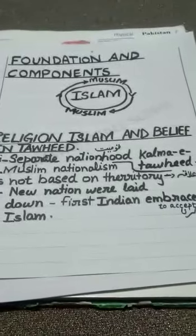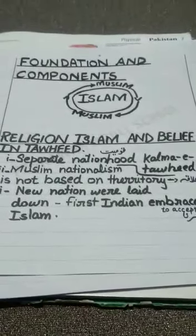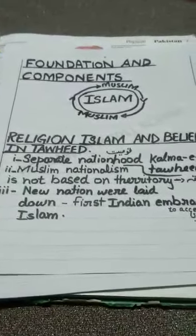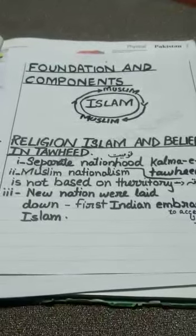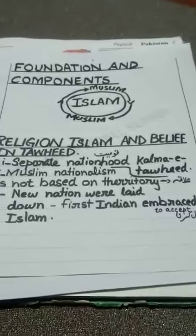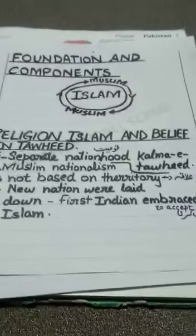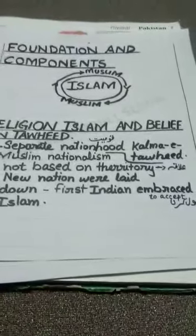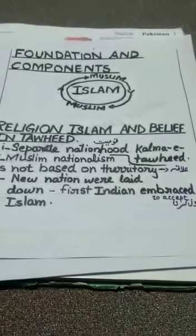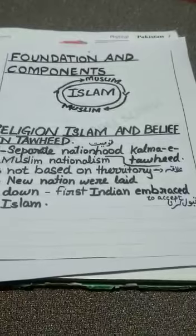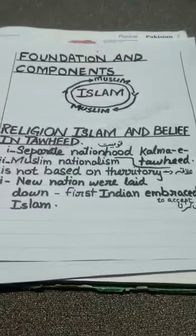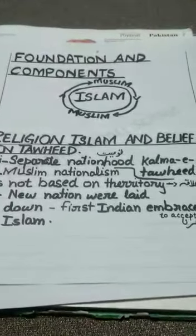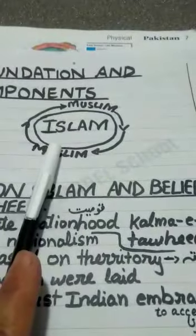This is contrary to the western ideology. Muslim nationalism is not based on territory, caste, creed, or wealth. The new nation came into being when the first Indian embraced Islam — at that very moment a new community came into existence in this subcontinent. Our complete belief is on Kalma-e-Tawhid; the Muslim life revolves around Islam. Islam is the nucleus and the whole life of the Muslim revolves around it.